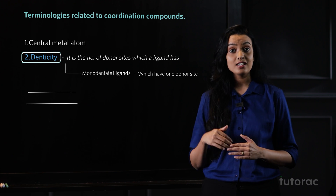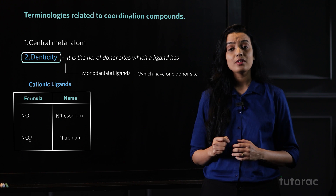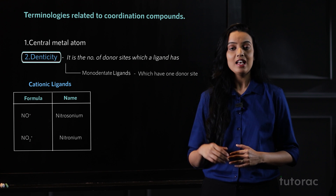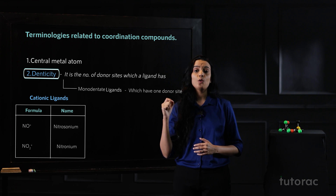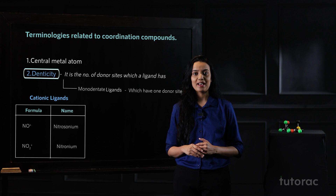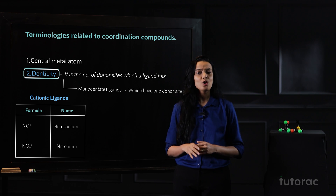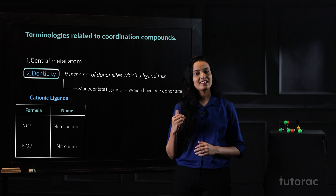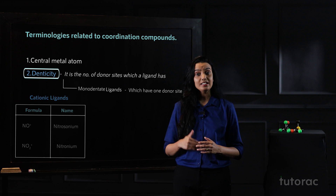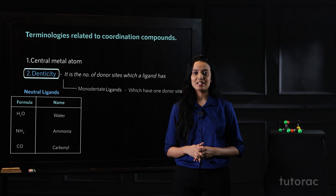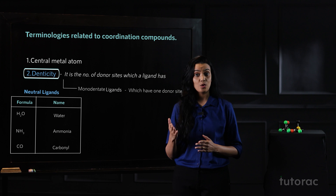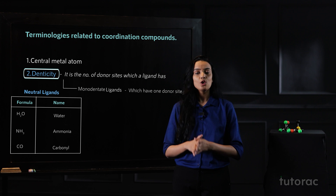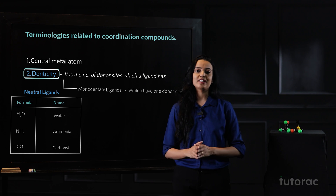The second category is cationic ligands. If a ligand has a positive charge, we call it a cationic ligand. In the table you can see NO+ (nitrosonium ion) and NO2+ (nitronium ion). These all form only a single coordinate bond, hence categorized under monodentate ligands. The last type is neutral ligands, which have no charge — like water, ammonia (NH3), and carbonyl. All these belong to monodentate ligands.